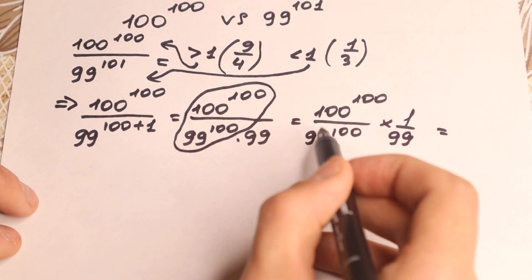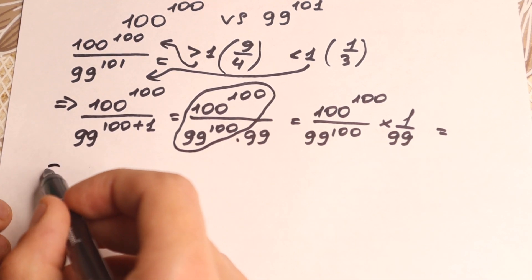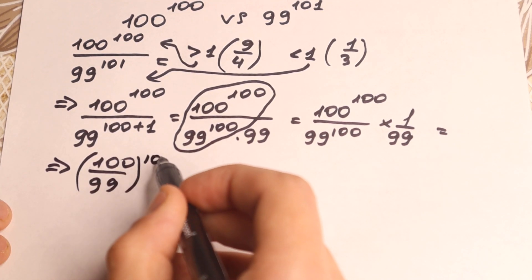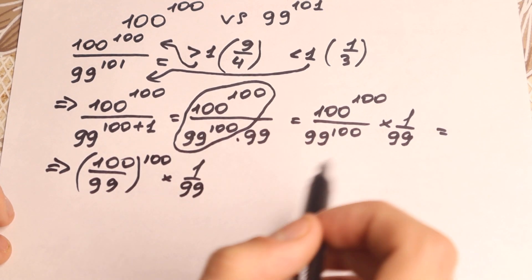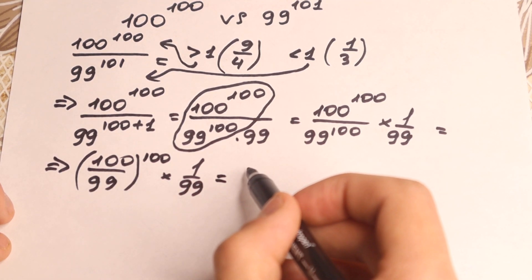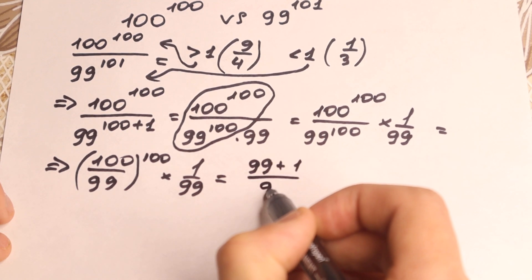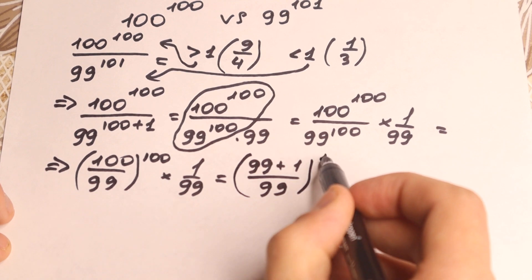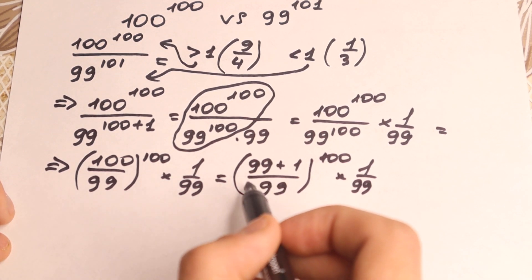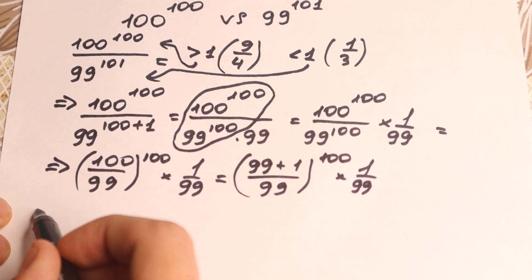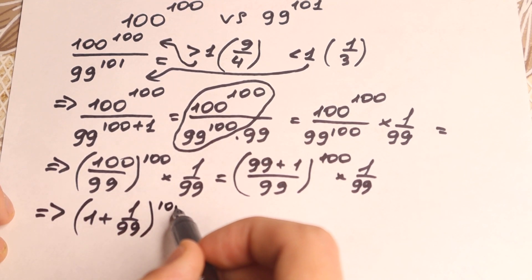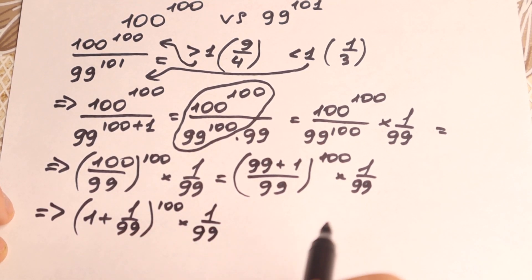We can take it into one common parentheses because we have the same power. So we can write it as 100 over 99, to the power 100, times 1 over 99. We can simplify the expression inside the parentheses: we write 100 as 99 plus 1, giving us 99 plus 1 over 99, raised to the power 100, times 1 over 99. Now let's divide that fraction: 1 plus 1 over 99, to the power 100, times 1 over 99.